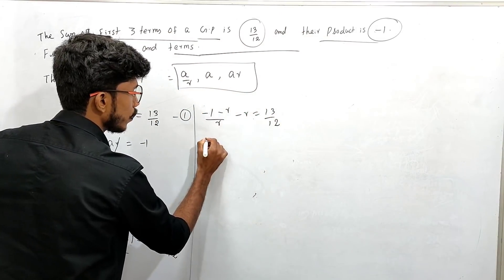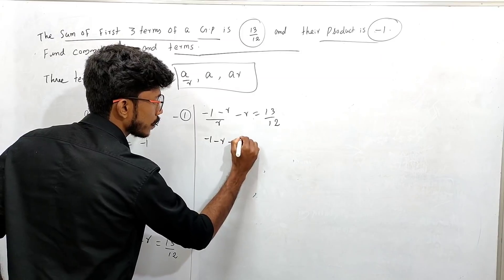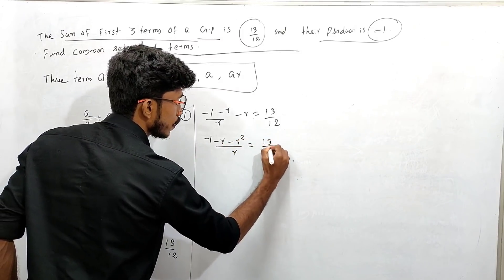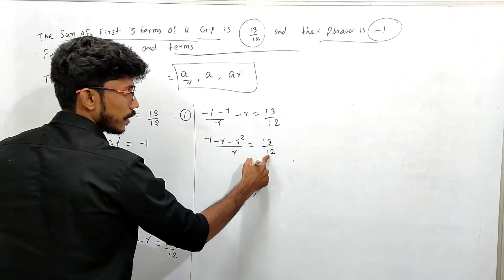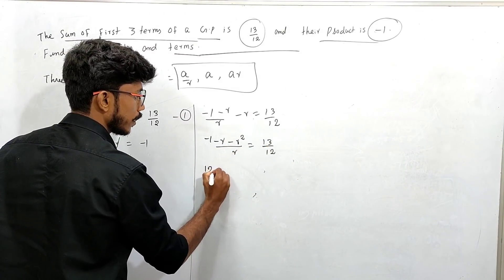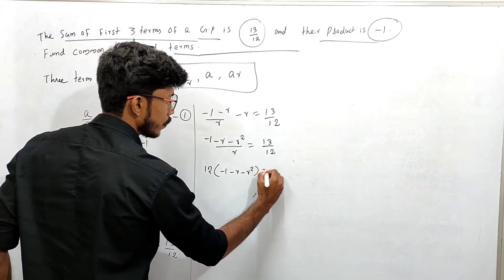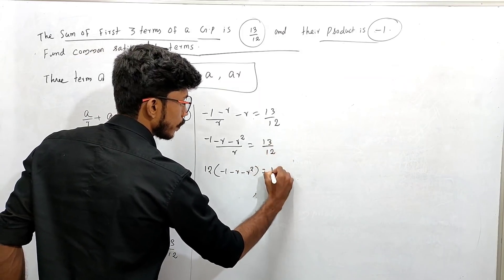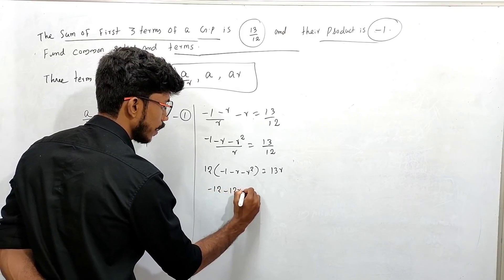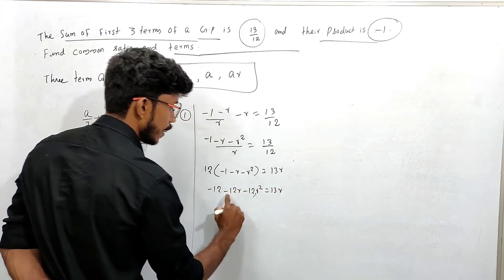Crossing through by R: minus 1 minus R minus R squared divided by R equals 13 by 12. If we multiply through by 12R: 12 times minus 1 minus R minus R squared equals 13R, giving minus 12 minus 12R minus 12R squared equals 13R.